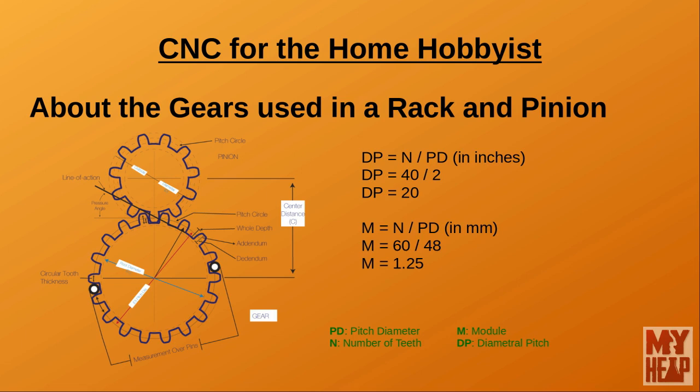In the metric system the unit is the millimeter, and the module is the number of teeth per millimeter of pitch diameter. If we had a gear with a pitch diameter of 48 millimeters and 60 teeth, we calculate the module by dividing 60 by 48, giving us 1.25. Knowing this allows us to easily convert between diametral pitch and module by converting the pitch diameter to whatever unit we need.